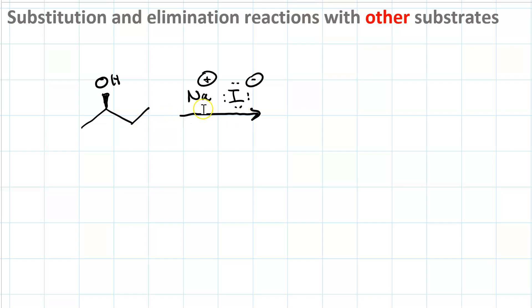Well, if I treat it with sodium iodide, iodide is a strong nucleophile and a non-base. Strong nucleophile means SN2. So I do nucleophilic attack and loss of a leaving group.